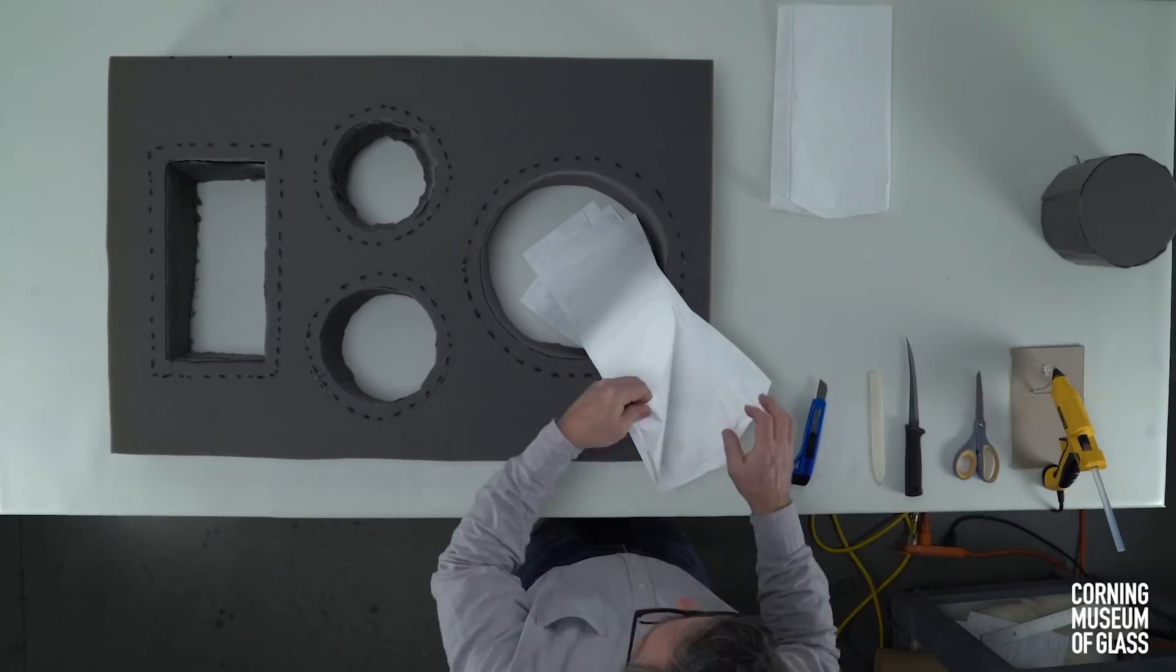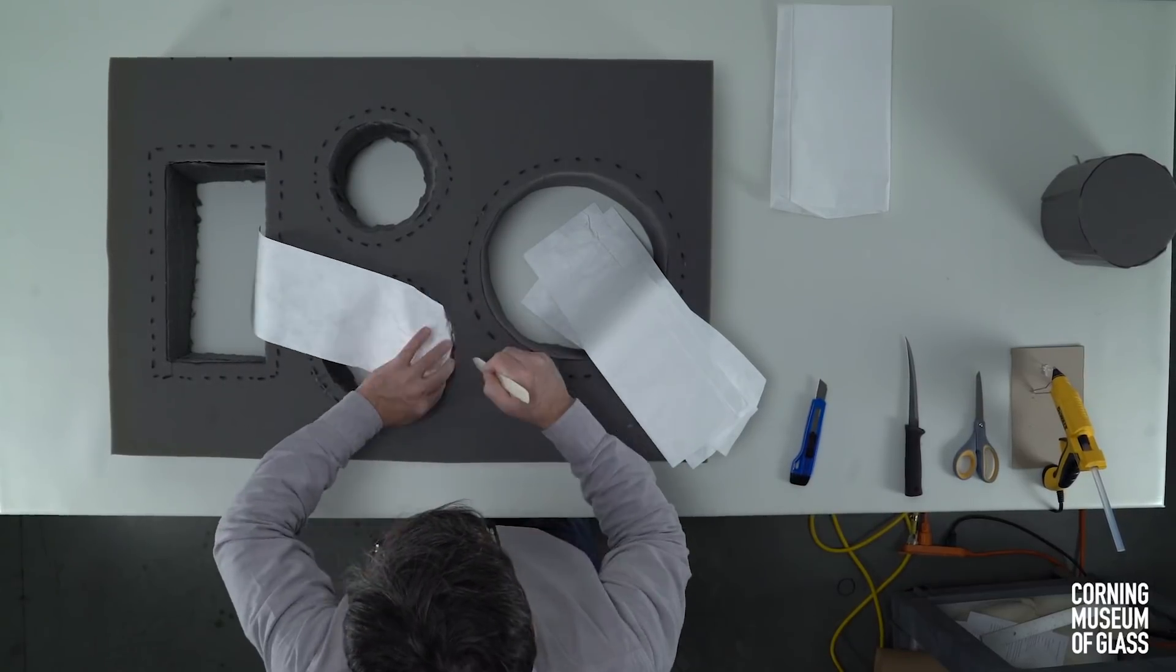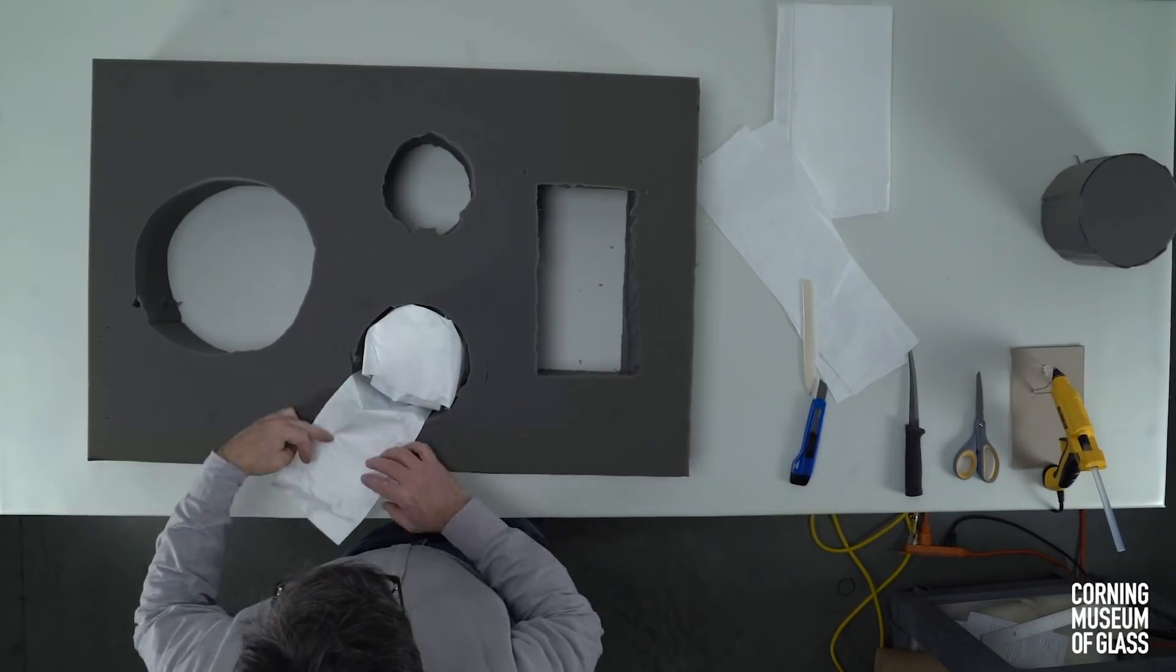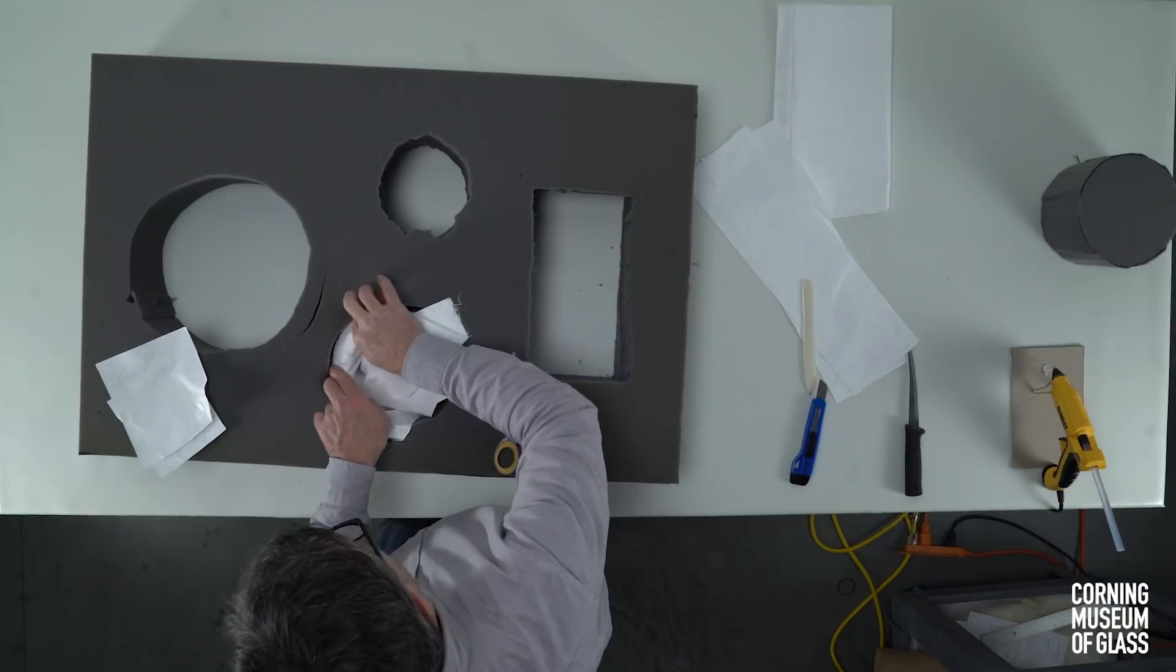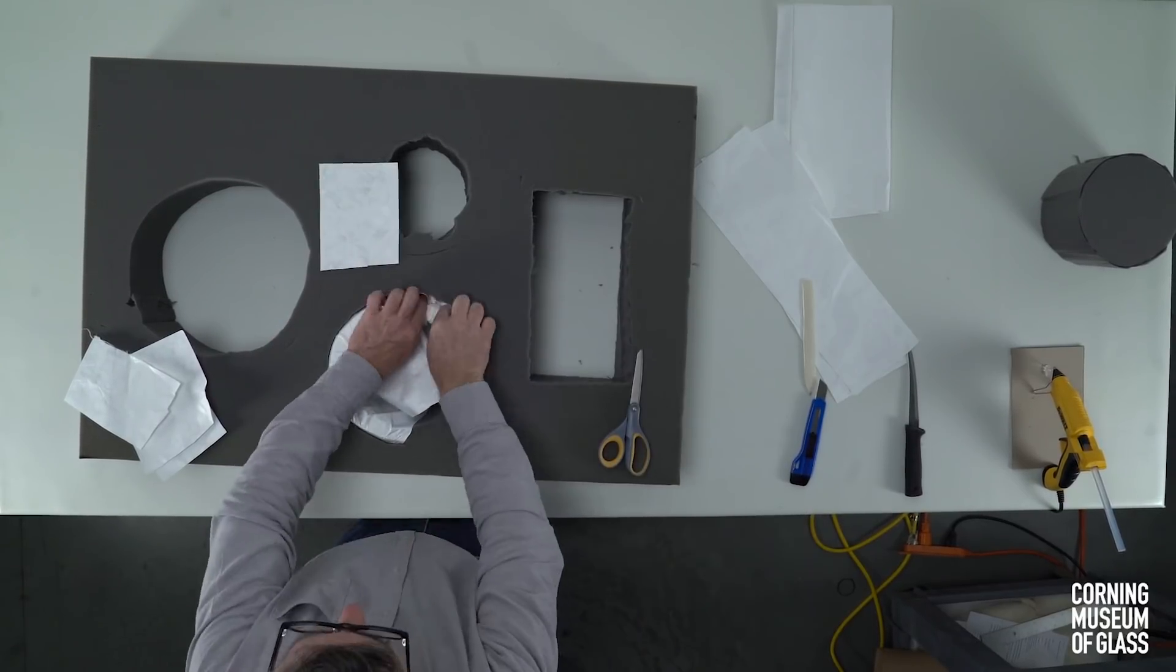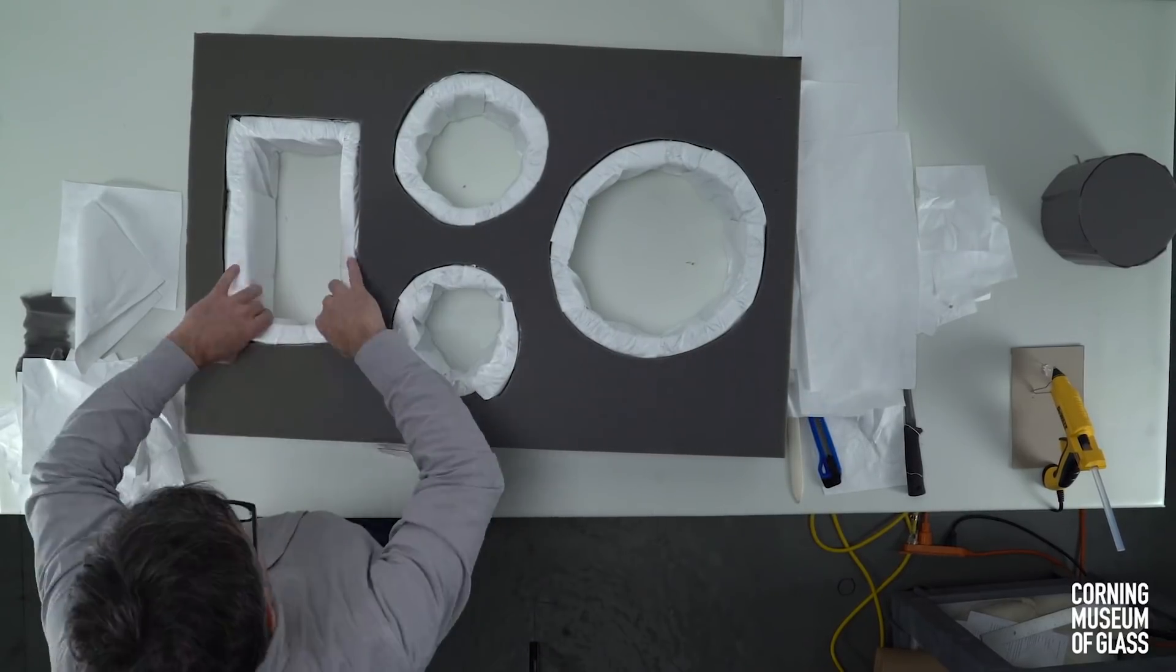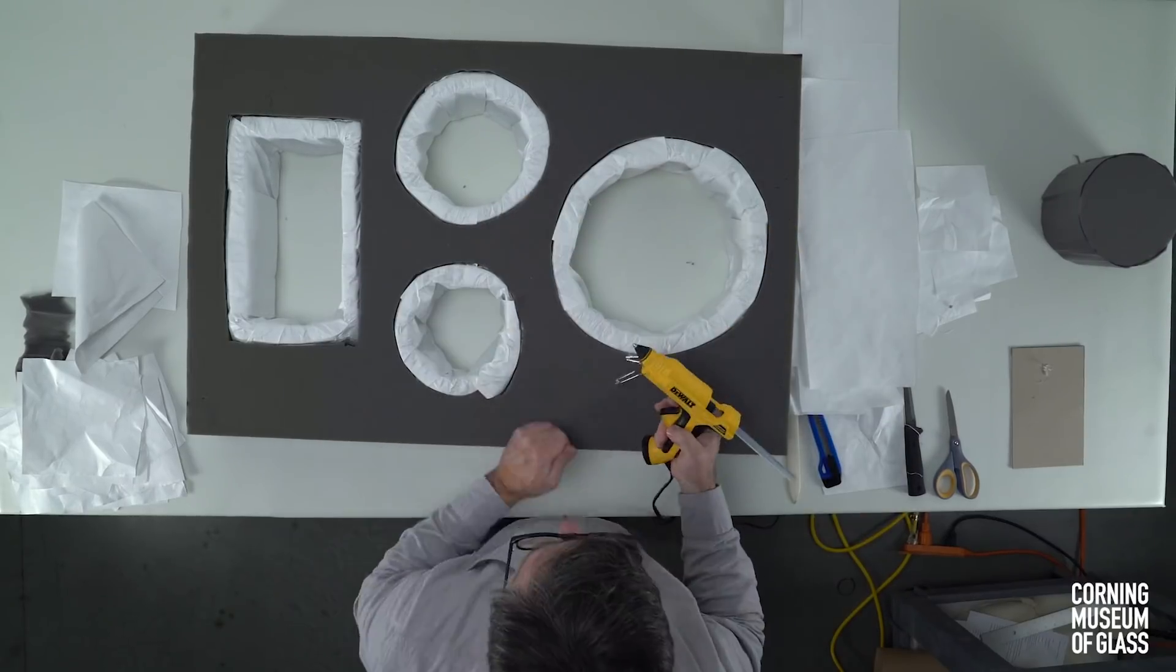Because foam can be abrasive to your objects, it's best to line each cavity with a soft material such as Tyvek or tissue paper. Cut the Tyvek or tissue into manageable strips. Tuck the ends into the shallow cut. A bone folder helps tuck the material into the foam evenly. You may opt to use hot glue dots to better secure the Tyvek or tissue to the foam.